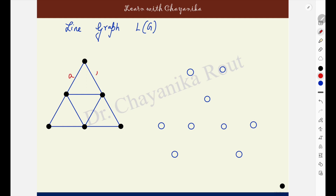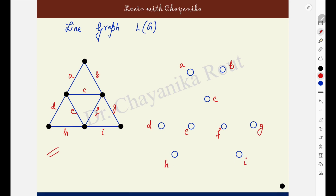Next, adjacencies. Let us label them first. Edges are A, B, C, D, E, F, G, H, I. So I have A, B, C, D, E, F, G, H, I — these labelings are for edges. Here the same labelings are for the corresponding vertices. Now come to adjacencies one by one.